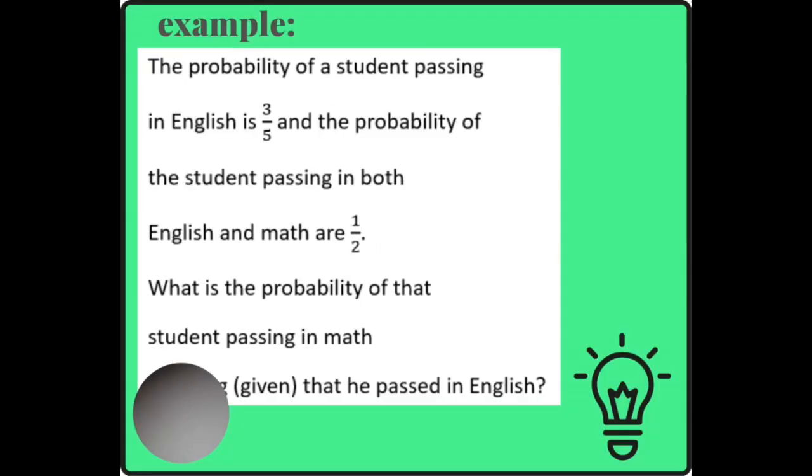Oh, I see. Now, perhaps we can do this question. The probability of a student passing in English is three over five. And the probability of the student passing in both English and maths is half. What is the probability of that student passing in maths given that he passed in English already?